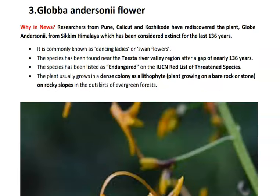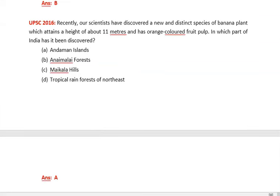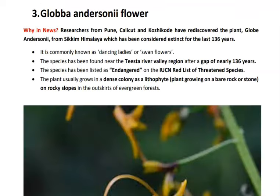The third topic is a species of flower that has been rediscovered after 136 years, having earlier been thought extinct. A similar UPSC 2016 question asked about a banana plant species about 11 meters tall with orange-colored fruit pulp. When reading about a species, concentrate on three things: the location where it was found, its special characteristic, and its category in the IUCN Red List.